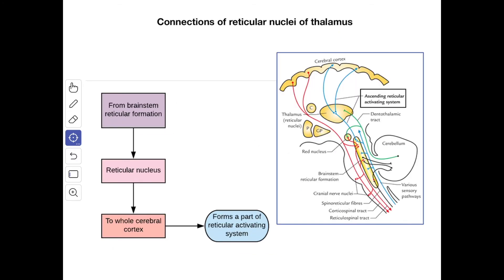Next we'll see the connections of the reticular nuclei of the thalamus. From the brainstem reticular formation the afferent goes to the reticular nucleus. From here the efferent goes to the whole cerebral cortex. The function is it forms a part of the reticular activating system.